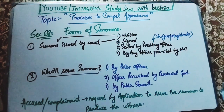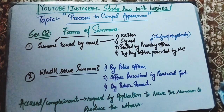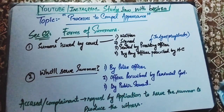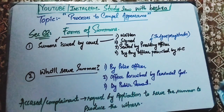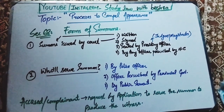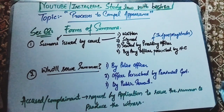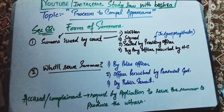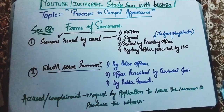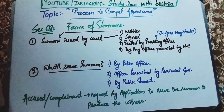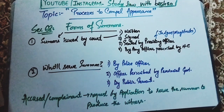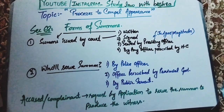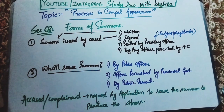First, the summon must be in written form. Second and third, it must be signed and sealed by the presiding officer — meaning the judges and magistrates who preside over the court. Fourth, by any other officer appointed by the High Court if the judge is not available. Within the same section, it also addresses who will serve the summon. The summon issued by the court is given to a police officer, or any officer appointed by the provincial government for this purpose, or any public servant — these three persons will serve the summon.